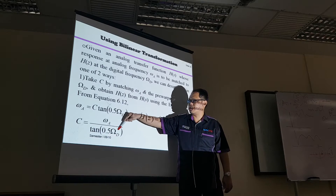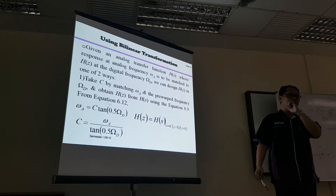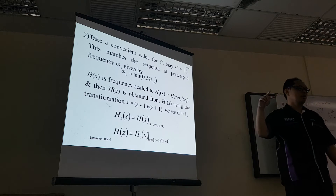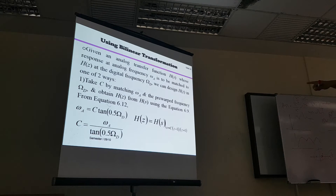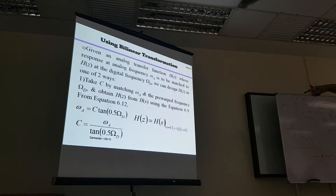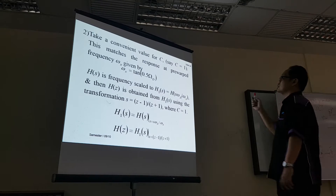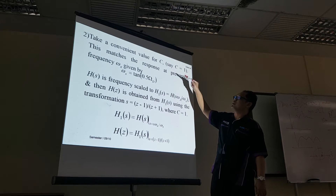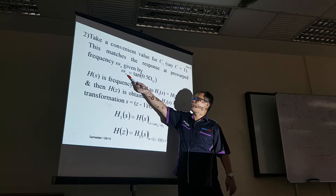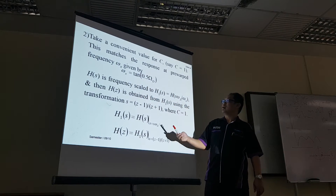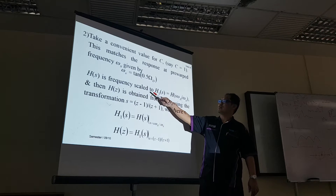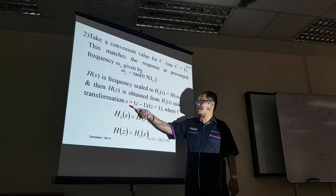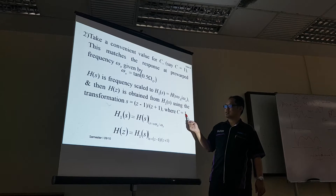From that, you can find C — the standard value that matches the formula. The second method is to assume C equals 1. You don't need to find C, but you have to pre-warp the equation by calculating Ω_X = tan(0.5·Ω_D). Then find H(S), and scale H(S) to become H(S·Ω_A/Ω_X), then use the transformation S = (Z−1)/(Z+1) where C equals 1.